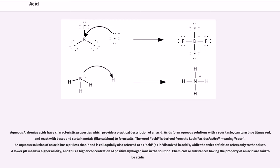Aqueous Arrhenius acids have characteristic properties which provide a practical description of an acid. Acids form aqueous solutions with a sour taste, can turn blue litmus red, and react with bases and certain metals like calcium to form salts. The word acid is derived from the Latin acidus/acere meaning sour. An aqueous solution of an acid has a pH less than 7 and is colloquially also referred to as acid, as in dissolved in acid, while the strict definition refers only to the solute. A lower pH means a higher acidity and thus a higher concentration of positive hydrogen ions in the solution.